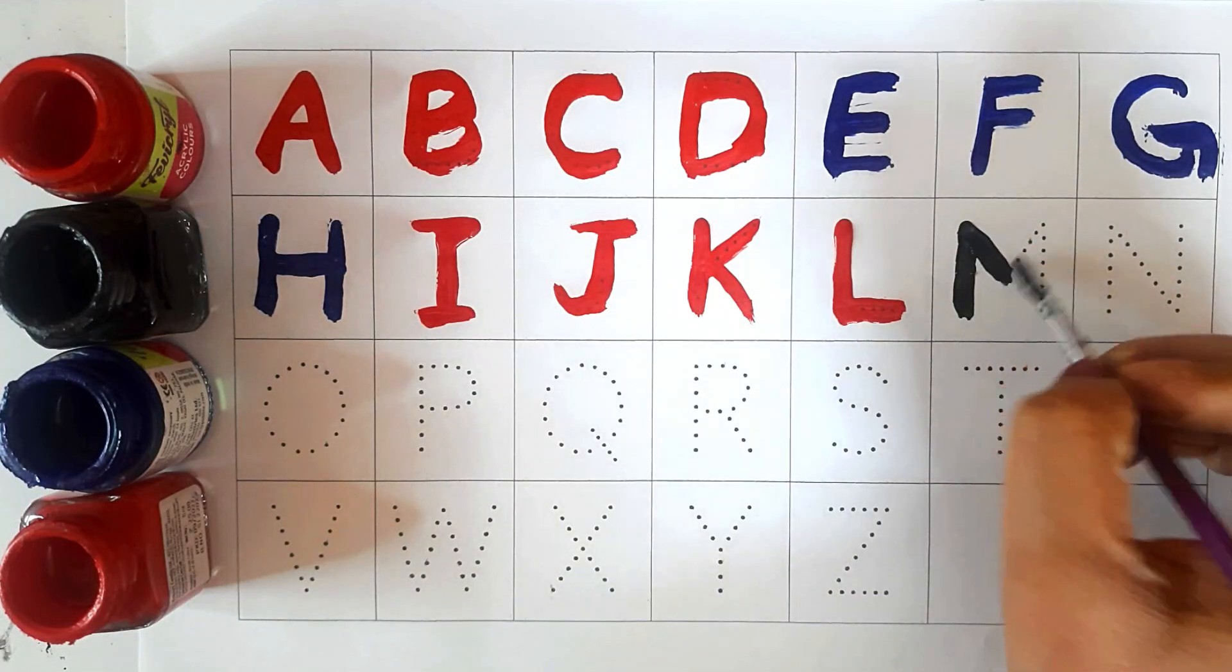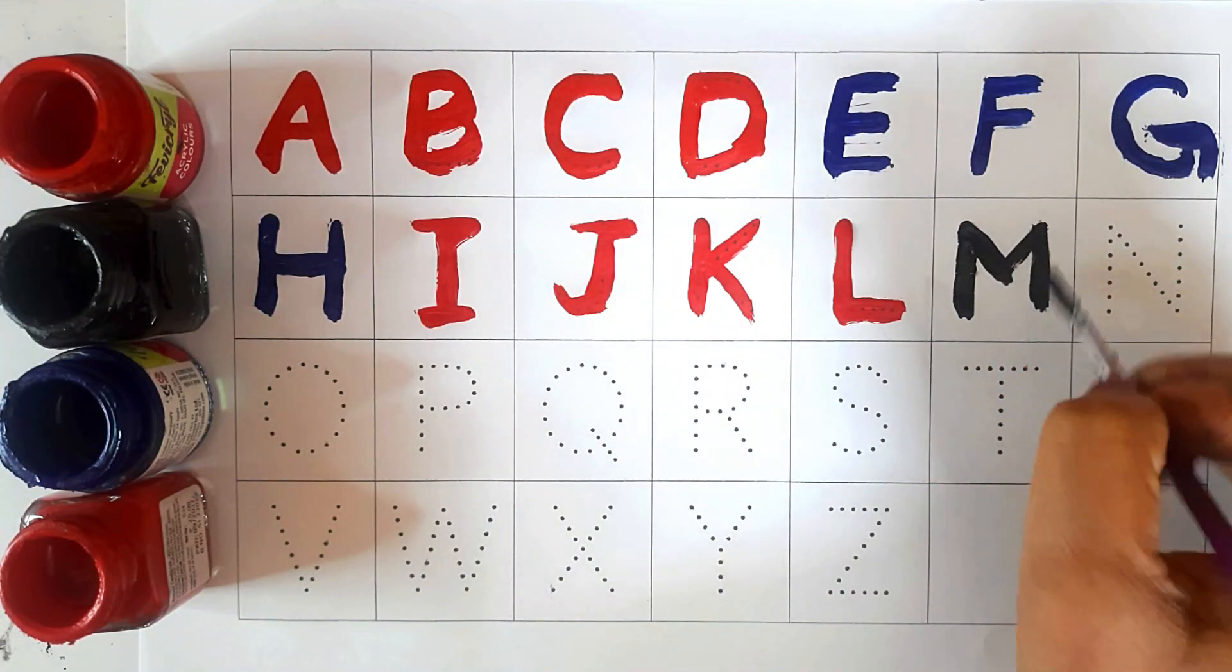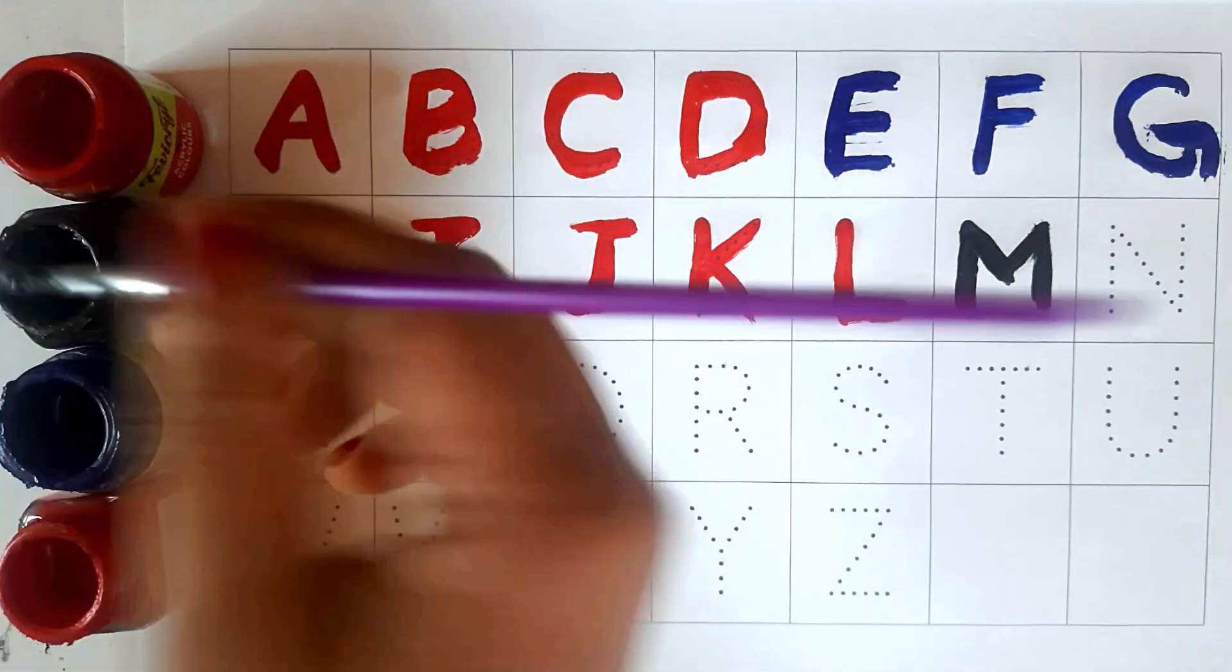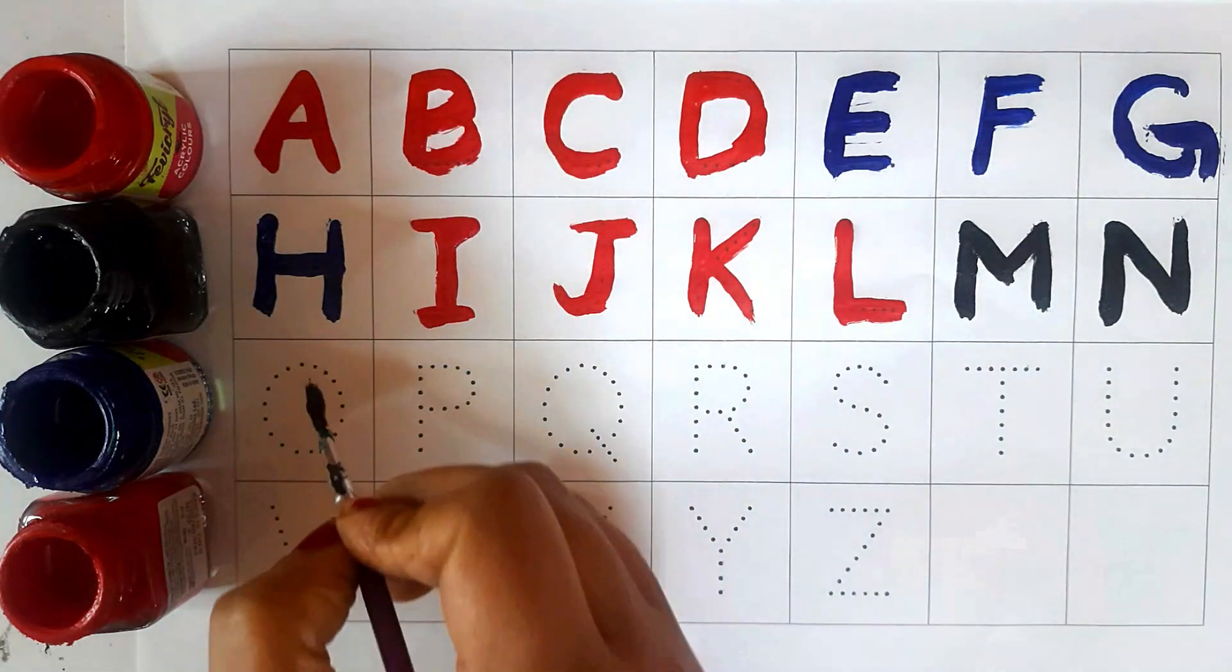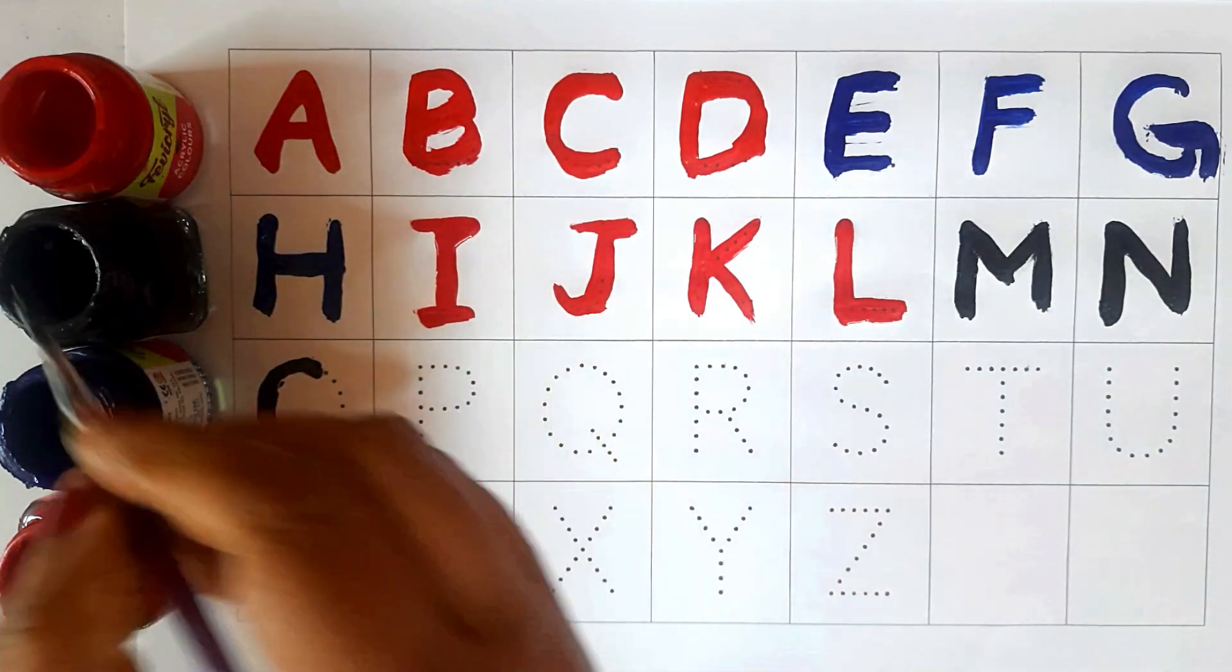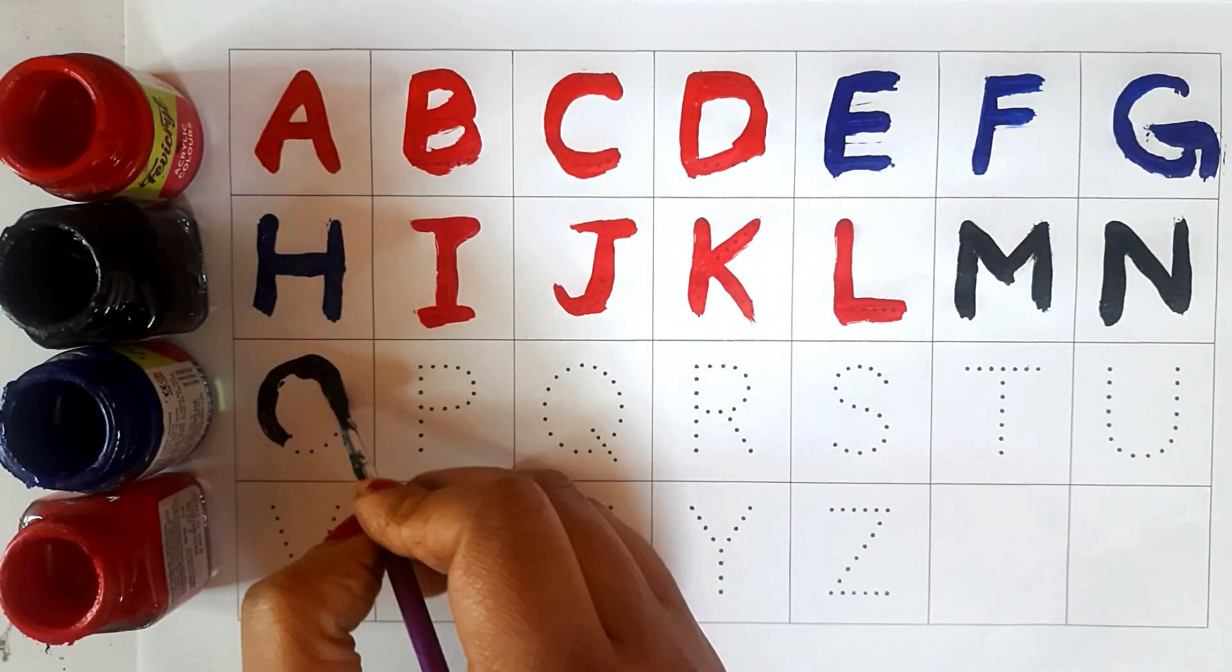Black color. M, M for mango. Black color. N, N for nest. Black color. O, O for owl.